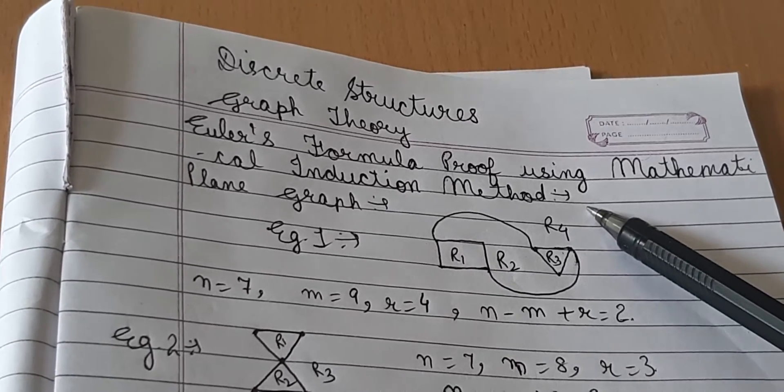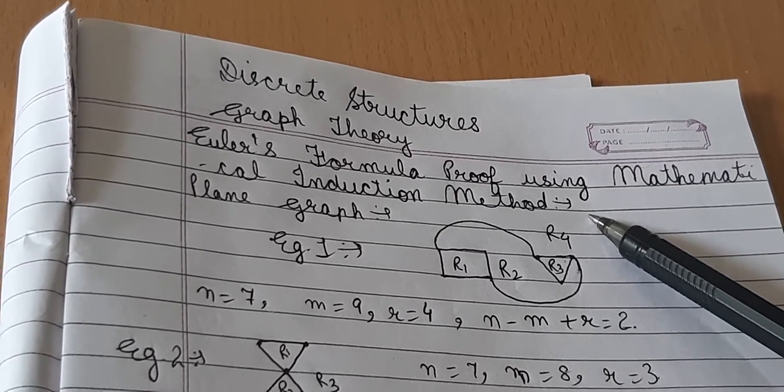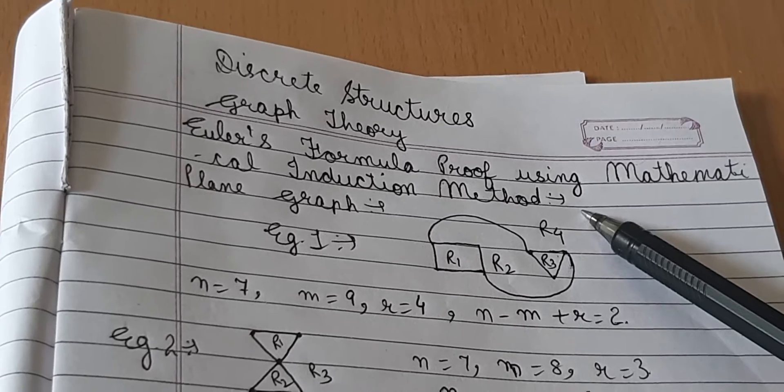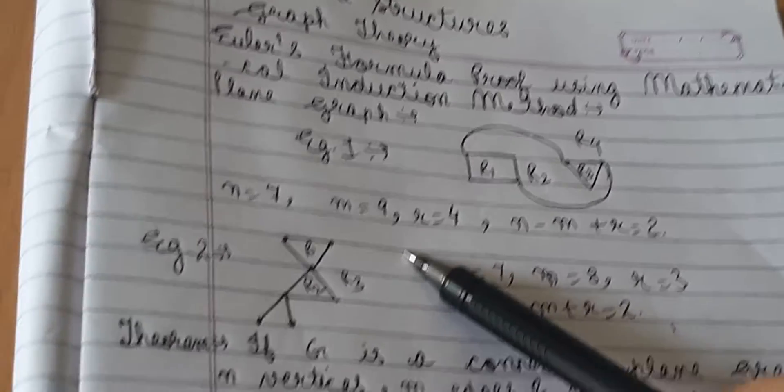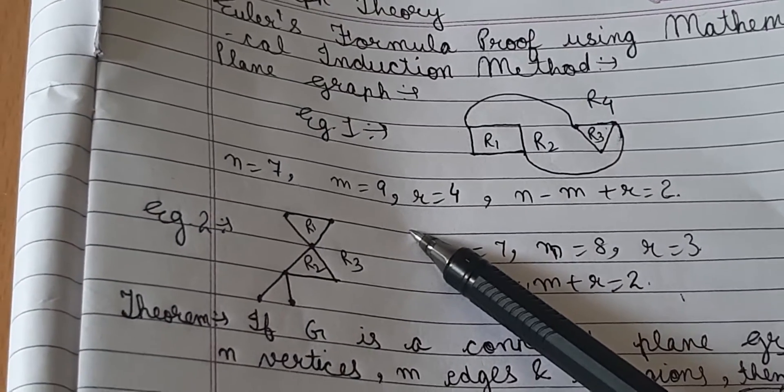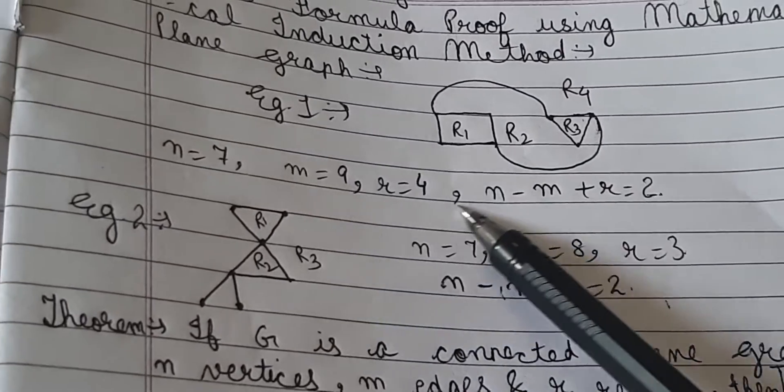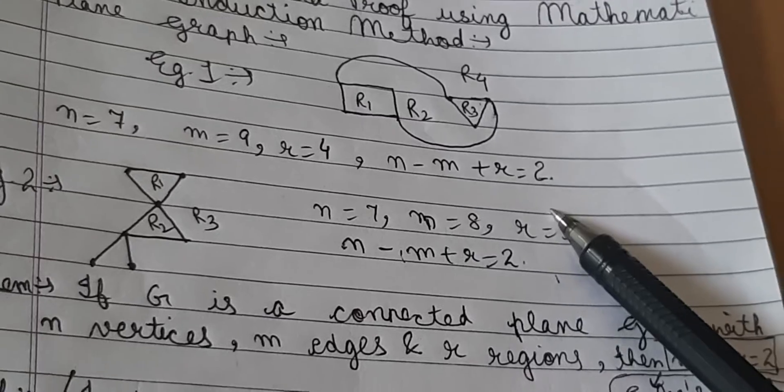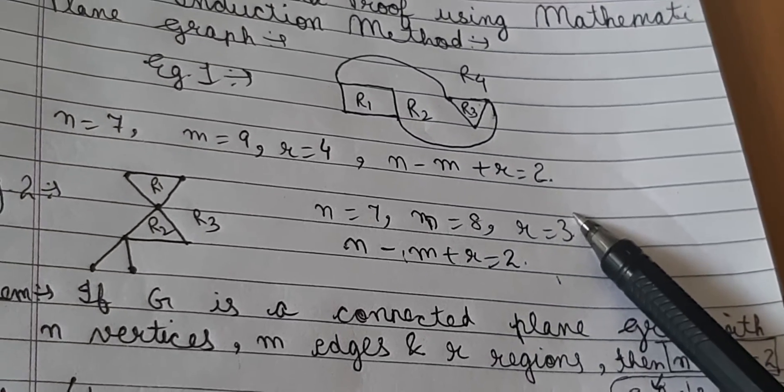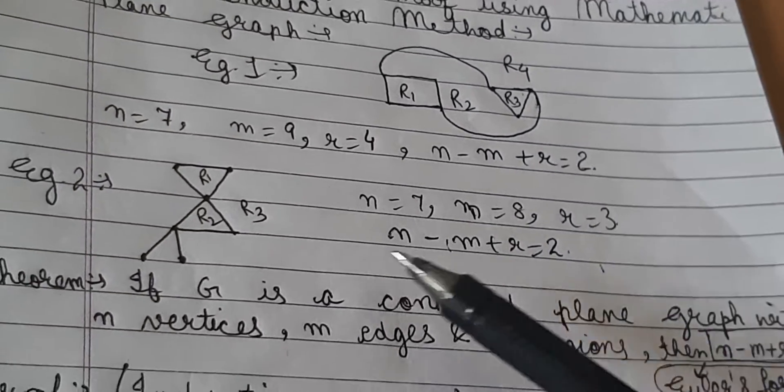We already saw that there are 4 regions in this example. We see that we have 7 vertices, 9 edges and 4 regions. Now you may notice if you take number of vertices minus number of edges plus number of regions you get 2.